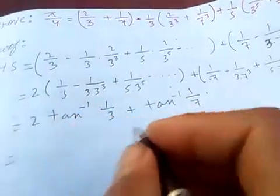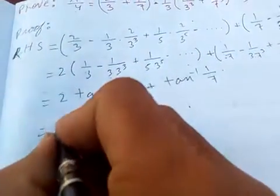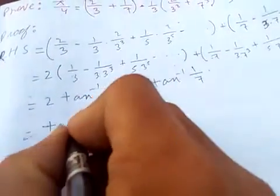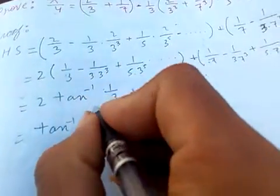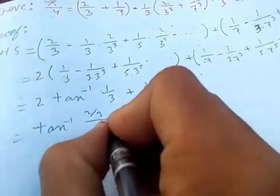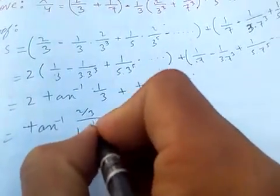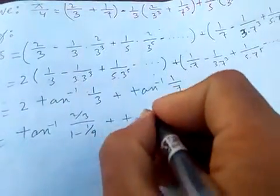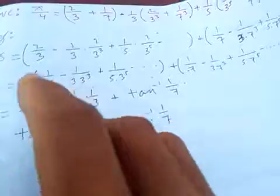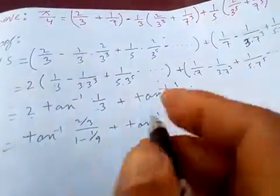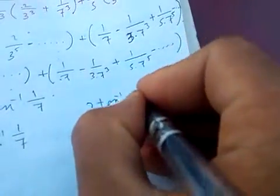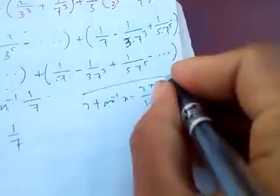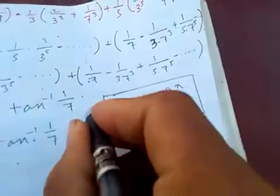Let's simplify. So 2·arctan(1/3) is the same as 2x divided by 1 minus x² — that is, 2·(1/3) divided by 1 minus (1/9) — plus arctan(1/7). Because 2·arctan(x) equals arctan(2x / (1 − x²)), so we apply that here.